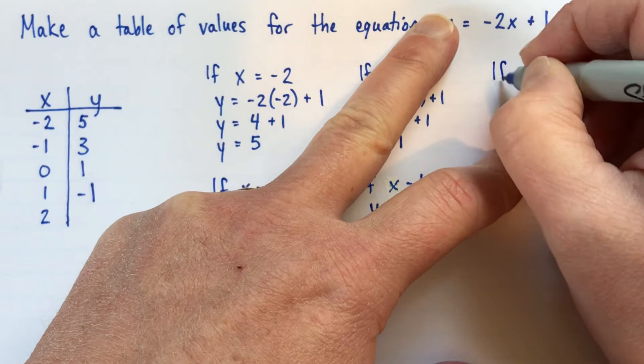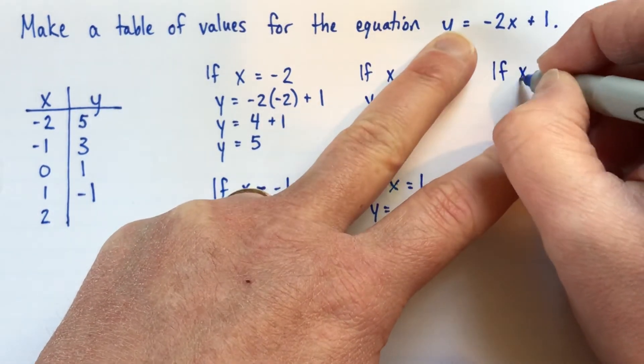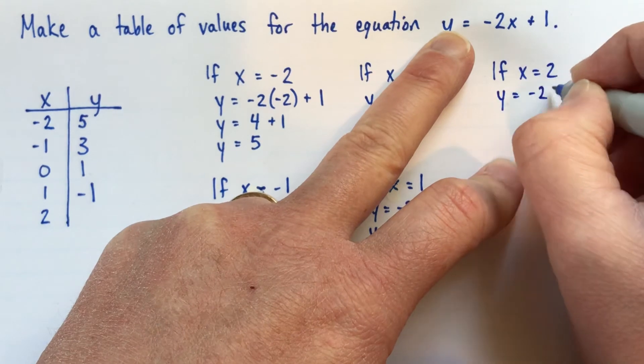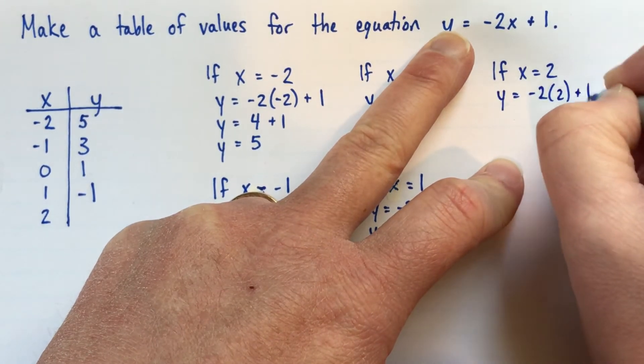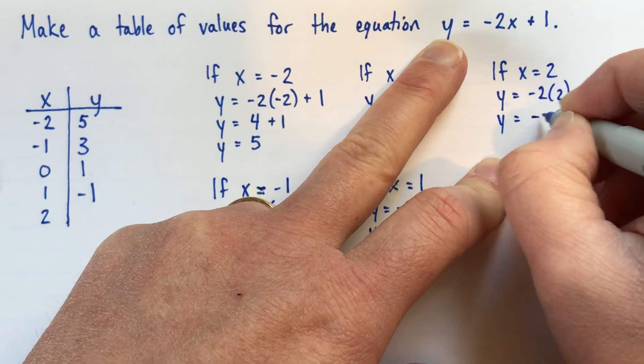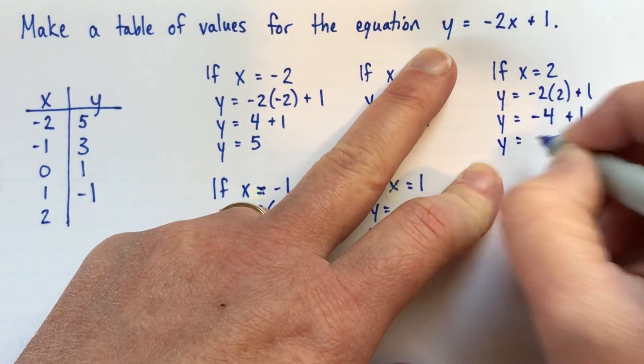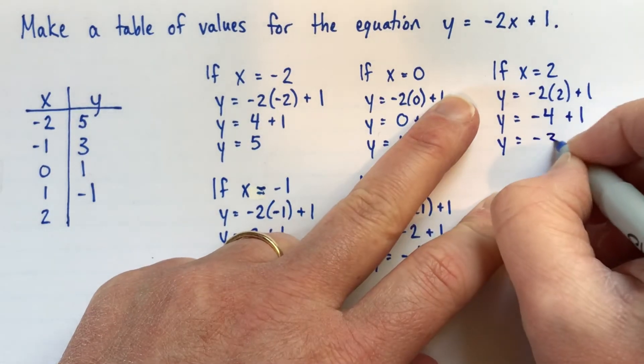and then we'll go and check to make sure that we've got a nice pattern. If x is equal to 2, y is negative 2 times 2, plus 1. So that's negative 4, plus 1. Negative 4 plus 1 is negative 3.